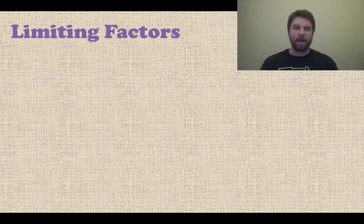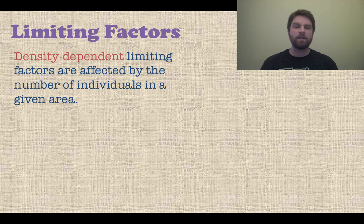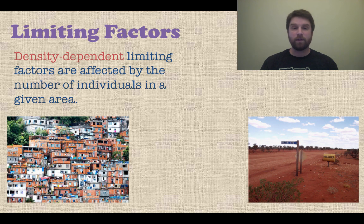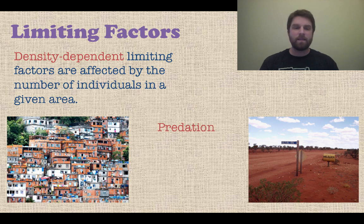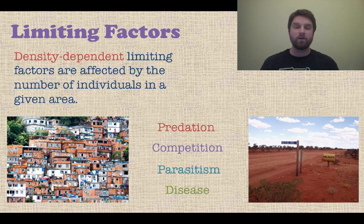Now let's look at some limiting factors for different populations. First, density-dependent limiting factors — these are affected by the number of individuals in a given area, so the density of a population. On the left you have a very highly dense population; on the right, a very sparse low-density area. These factors include predation, competition for resources, parasitism, and disease — all of which affect dense populations much more than less dense ones.